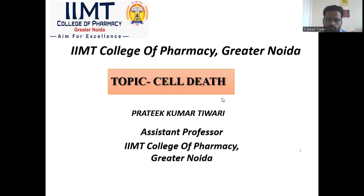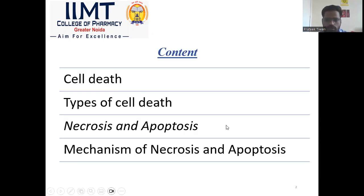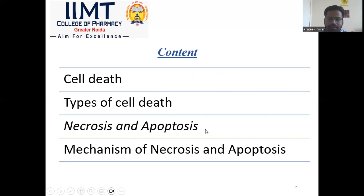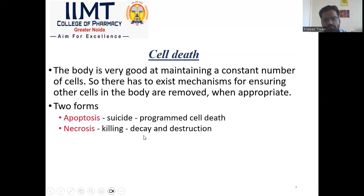Now we move forward to discuss what is cell death. This is a table of content. These are the following major topics which we cover in this video: what is cell death, how many types of cell death there are, then we discuss necrosis, apoptosis, and respectively their mechanisms.